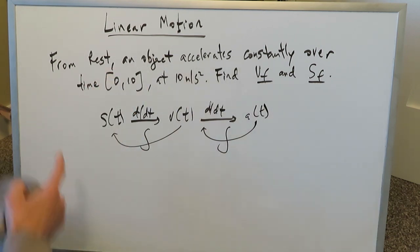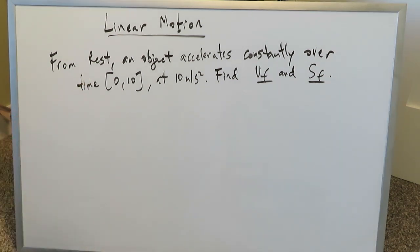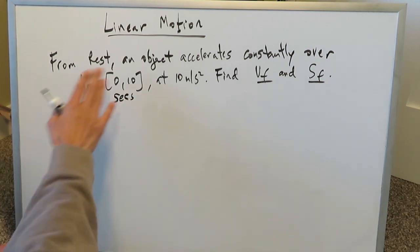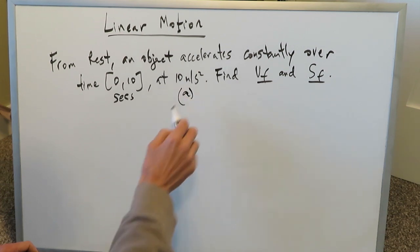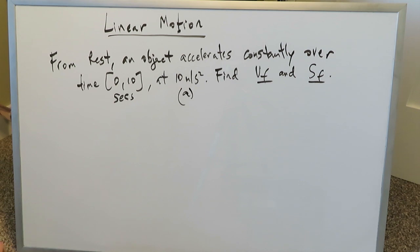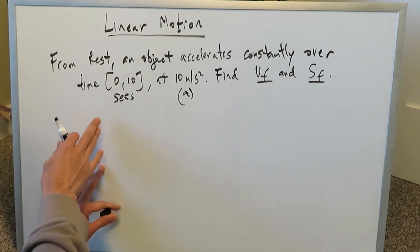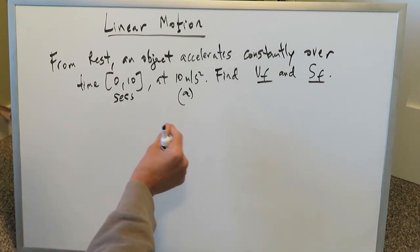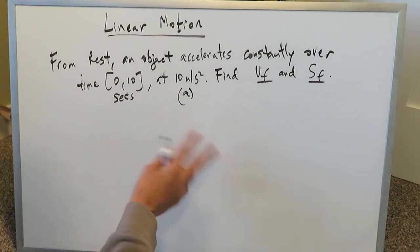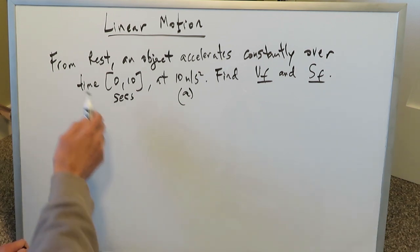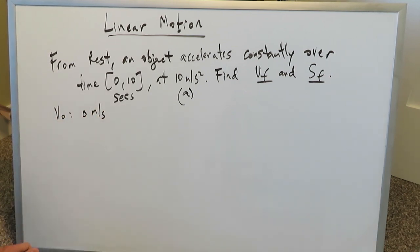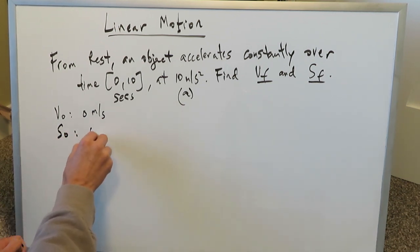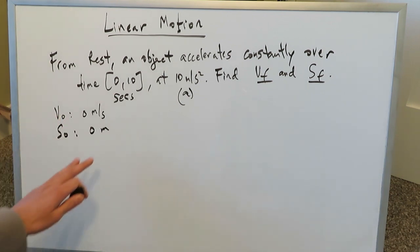From rest, an object accelerates constantly over the time interval 0 to 10 seconds at 10 meters per second squared. We have to find the final velocity and the final position of this object. We'll do this both the algebra way and the calculus way. From rest, the initial velocity is 0 meters per second, and the initial position is 0 meters — there is no movement, so there's no position.